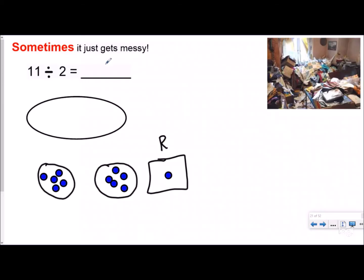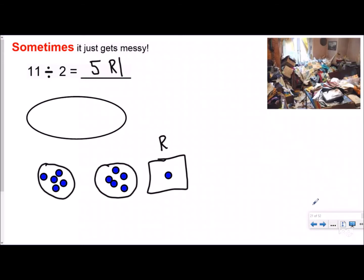Eleven divided by two gives you five in each group, but then you had a remainder of one. That's not too bad when it's just a math problem. But what about when it's a word problem? There are four different ways to answer a division problem that has a remainder.